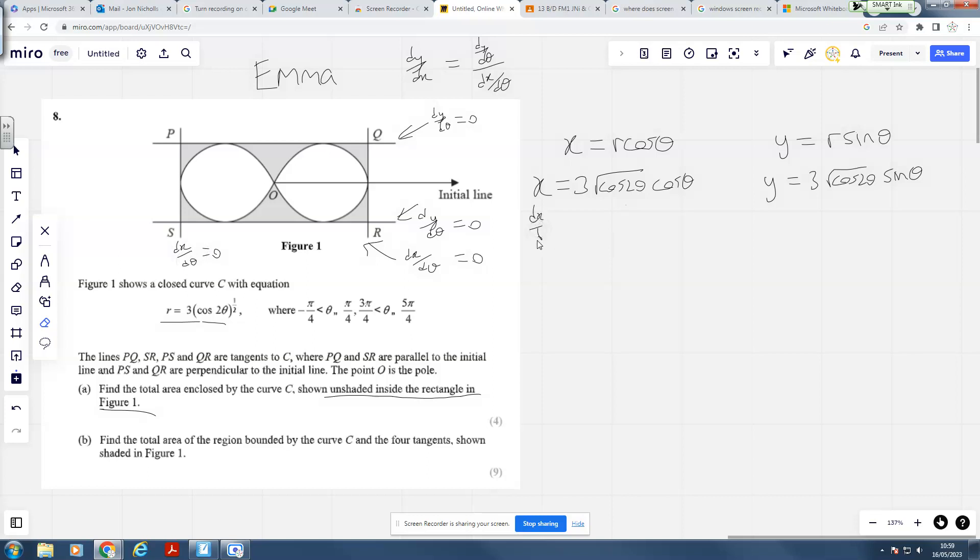So if we found dx by d theta, we're just going to use product rule for that. I'm just going to let 3 hang around. This is going to be a half times cos 2 theta to the minus a half, multiply by differentiating cos 2 theta you get minus 2 sine 2 theta, and then we times by the other side undifferentiated which is cos theta. Plus, now differentiate cos theta we get minus sine theta, and we're going to times up by this side undifferentiated, so that's root cos 2 theta.